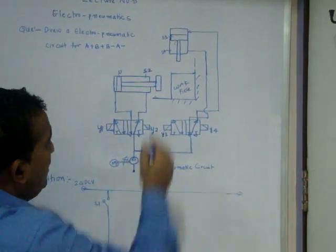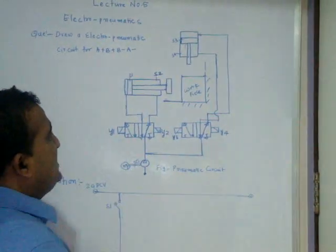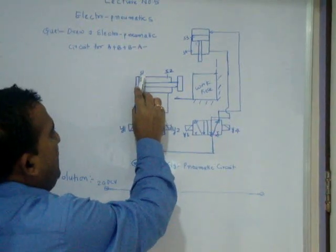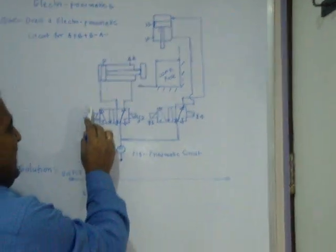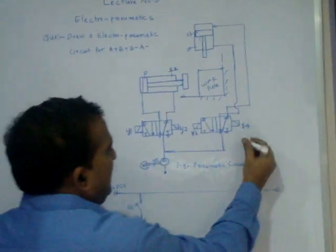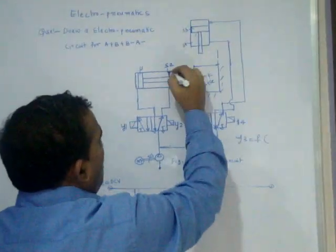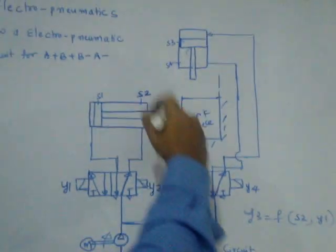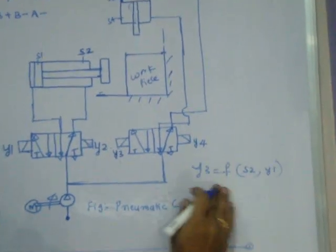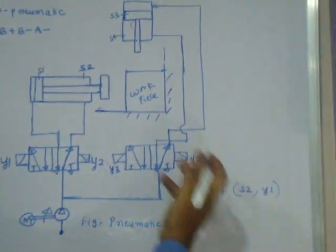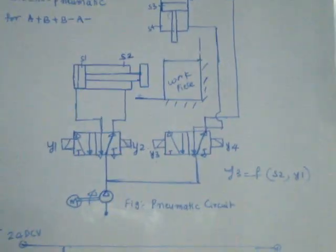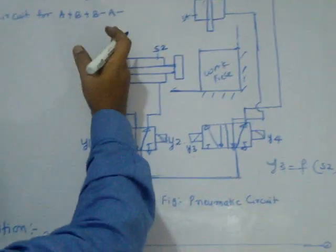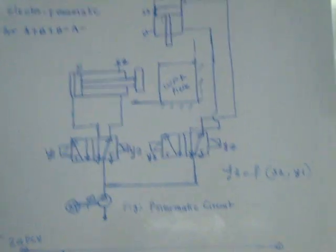In this problem, when Y3 turns on it is only an S3 condition, but I'll put two conditions for the first cycle. Not only S3 — I'll generate one more signal. Y1 should be on. Usually, as soon as this piston goes forward, S1 will turn off, then Y1 will turn off. But I'll generate a Y1 signal — I'll put the Y3 condition. Y3 is a function of not only S2 but Y1 also. And the second time, when it goes back, I'll make this latching off. Then Y3 will stop, and the piston will stop at S3. I'll go for latching.